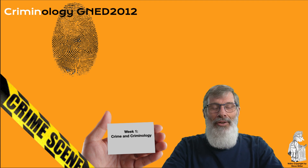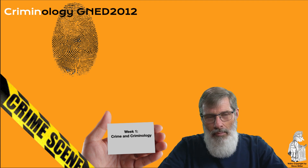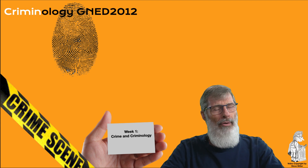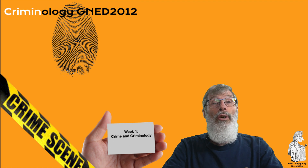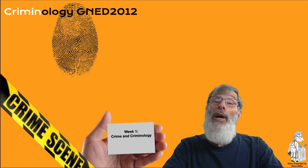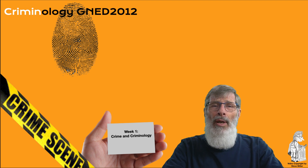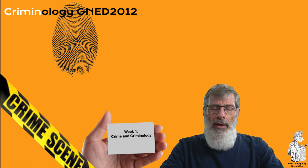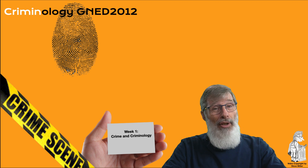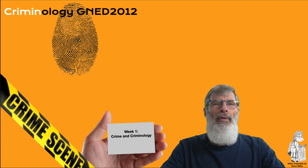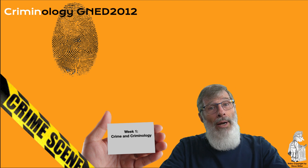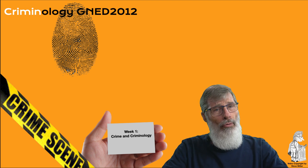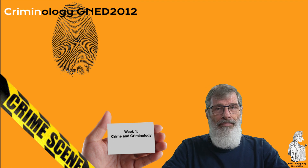Hi everybody, welcome to criminology. Bear in mind this is going to be a survey course, which means we're going to do an overview of the whole topic of criminology. We're going to look at the beginning — crime and criminology, which is chapter one. We'll go through an introductory component around important definitions and concepts, then move into some theories and look at crime demographics and statistics. We'll do this in two parts.